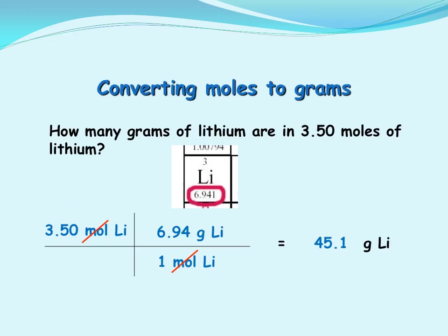In this problem, we're asked to convert from moles to grams. The question reads: How many grams of lithium are in 3.50 moles of lithium? So first we go find lithium on the periodic table. We see that the mass is reported as 6.941.